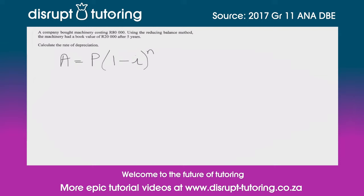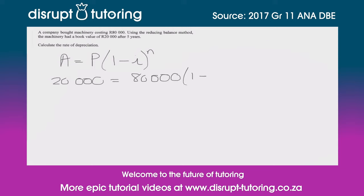Let's plug in the values we know. The machinery originally cost R80,000, and at the end of the period it was R20,000, so our accumulated value A is 20,000. Our value going in P was 80,000, then we've got (1 minus i) which is what we're trying to solve for, and n is 5 years.